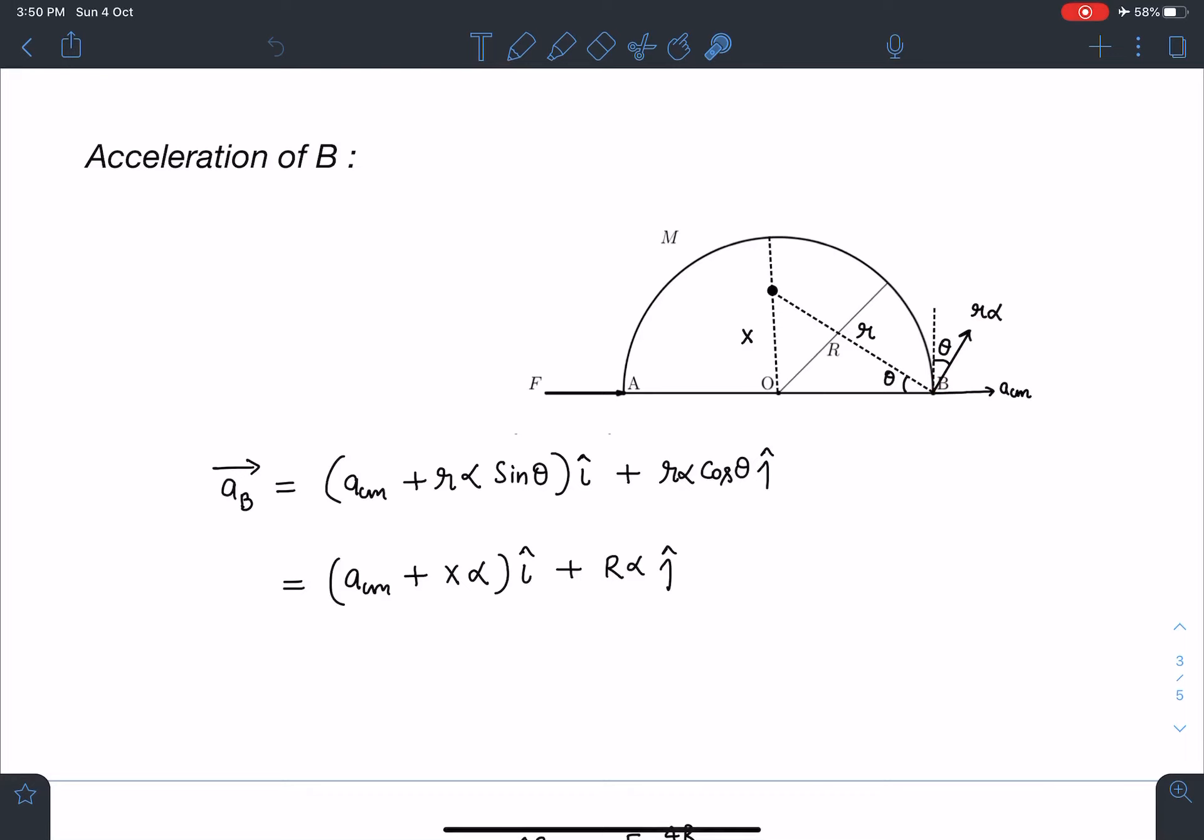Now, net acceleration of point B I can write as acm plus r alpha sin theta i-cap plus r alpha cos theta j-cap. Alpha is known to us, acm value is also known to us.